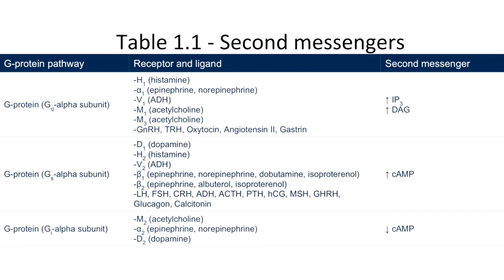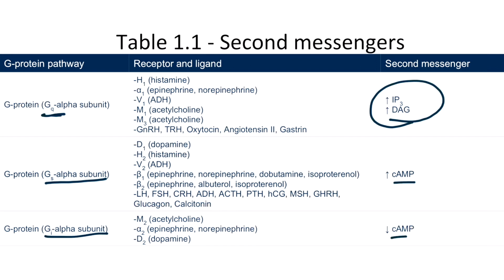This is Table 1.1, which provides a list of some of the important second messenger pathways. From this table, you need to remember that there are two pathways. First, the GQ alpha subunit pathway, which regulates IP3 and DAG. And second, the GS and the GI alpha subunit pathways, and these both regulate cyclic AMP.